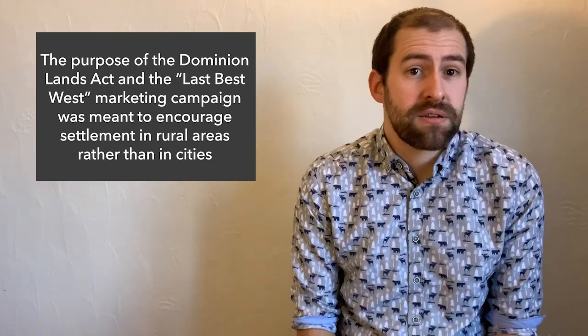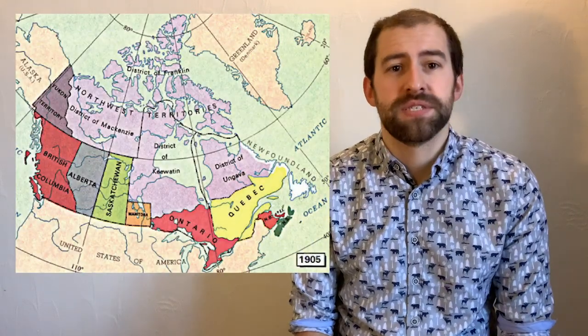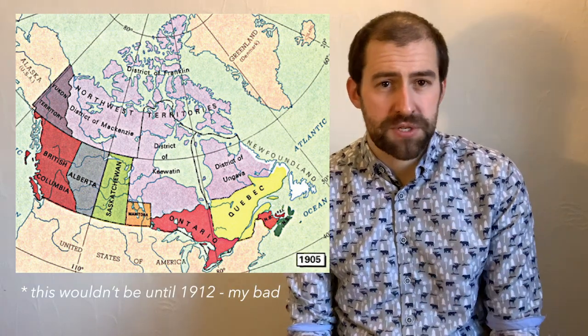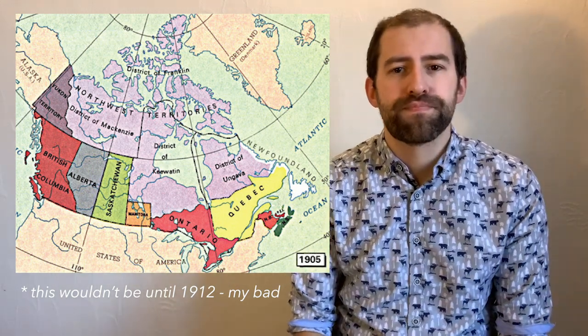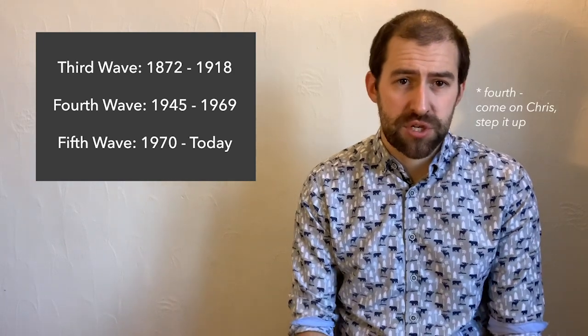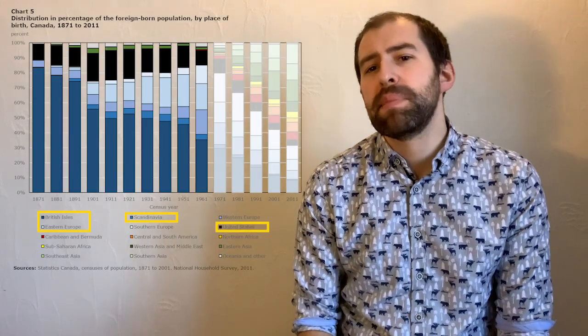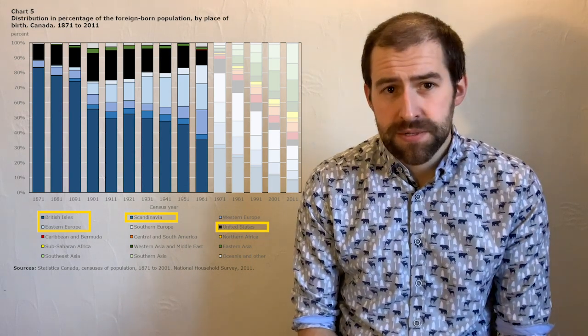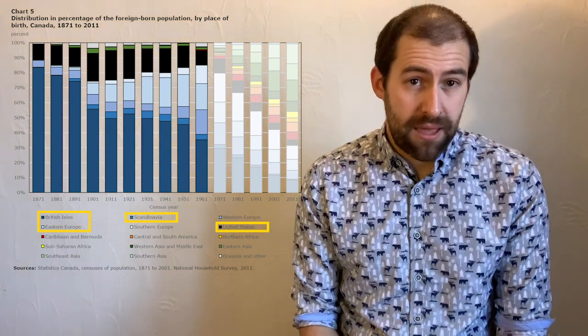The strategy worked, and by 1905 the Canadian government carved out two provinces from the Northwest Territories — Alberta and Saskatchewan — and filled in considerable portions of Manitoba. All this was occurring during what we call the third wave of Canadian immigration, approximately from the beginning of the Dominion Lands Act to the end of World War I. There was a slowdown during the Great Depression, but after World War II the Canadian government began aggressively courting new immigrants. During these waves, the overwhelming majority of immigrants came from the British Isles, mainland Europe, or Scandinavia, though a significant number also came from East Asia — particularly China.